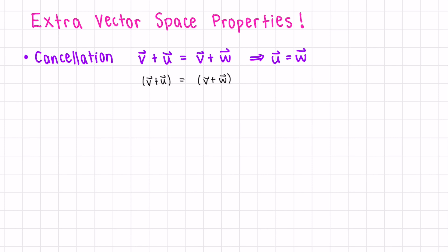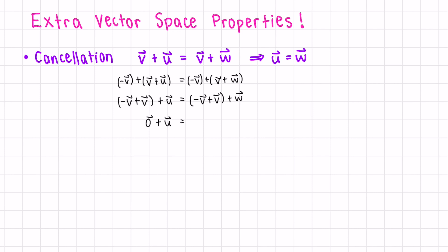We know that in vector spaces we have a negative vector, so we add negative v to each side. Because of associativity, we can rewrite it as (negative v + v) + u = (negative v + v) + w. We know negative v plus v is the zero vector, and the zero vector does nothing, so u equals w.